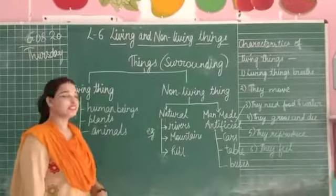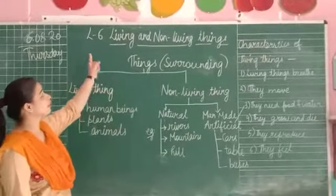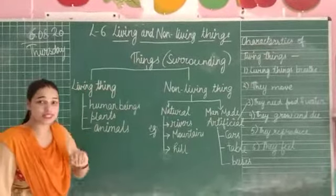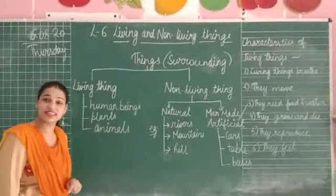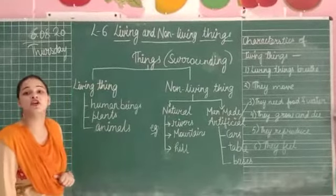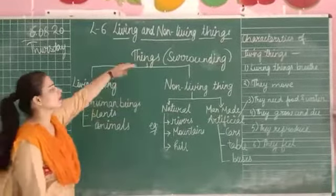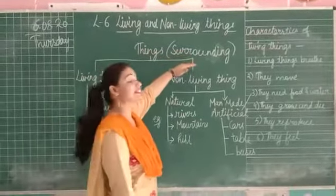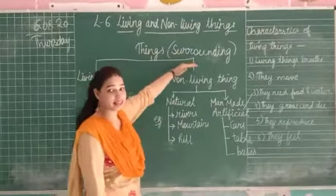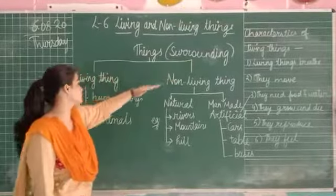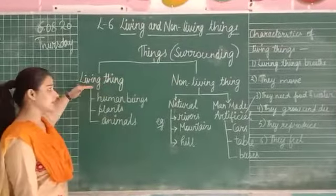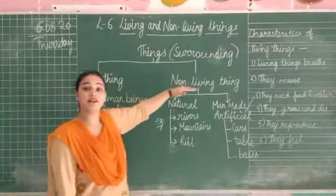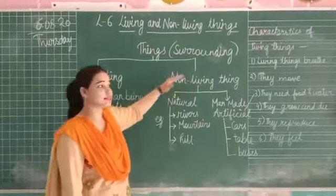Good morning dear students. Today we are going to do lesson number 6: living things and non-living things. Things in our surroundings are generally categorized into two parts: living things and non-living things.